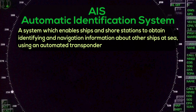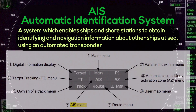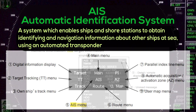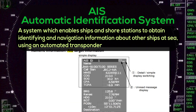AIS — Automatic Identification System: A system which enables ships and shore stations to obtain identifying and navigation information about other ships at sea using an automated transponder.